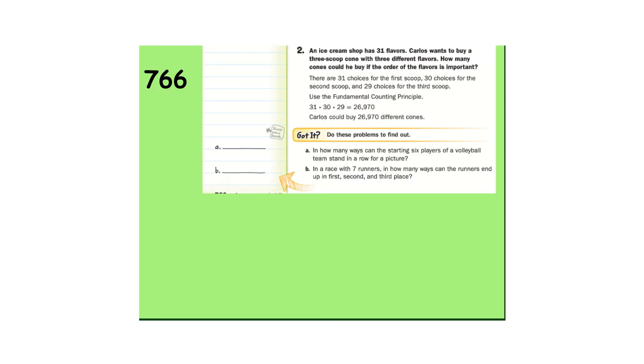An ice cream shop has 31 flavors. So there's 31 choices of ice cream for the first scoop. He's going to have his with three different flavors. So if he picks one for the first scoop, there's going to be 30 choices for the second scoop. 29 choices for the third scoop. Multiply those numbers together and you get 26,970. Go ahead and try A and B. Pause the video.